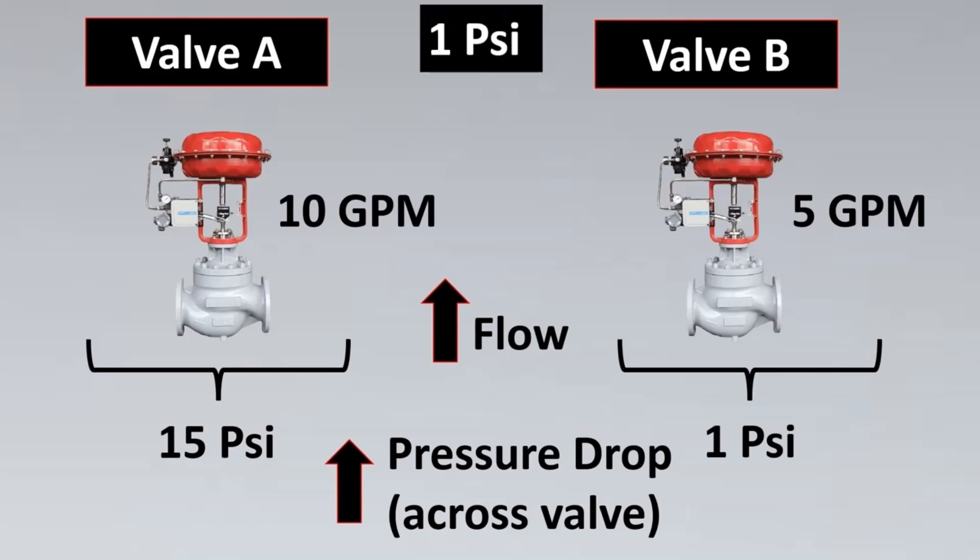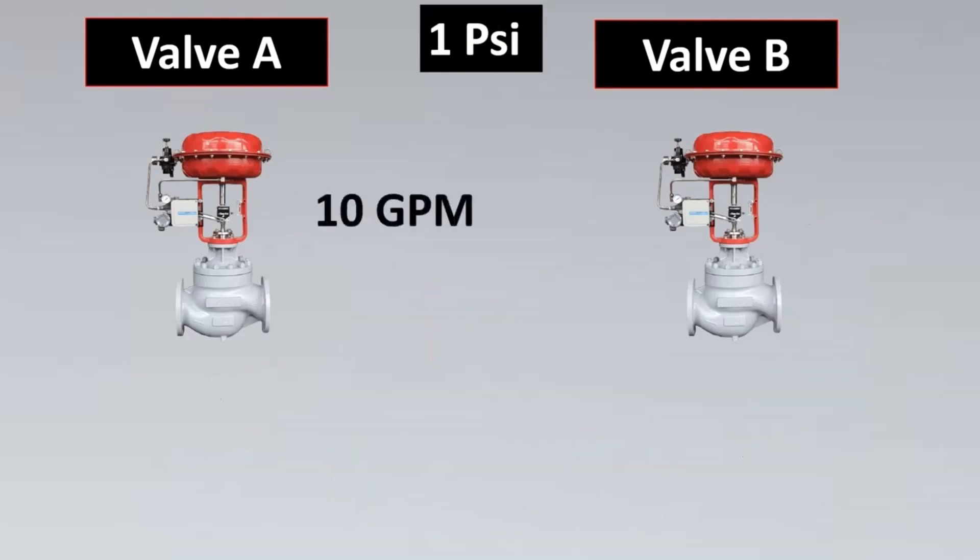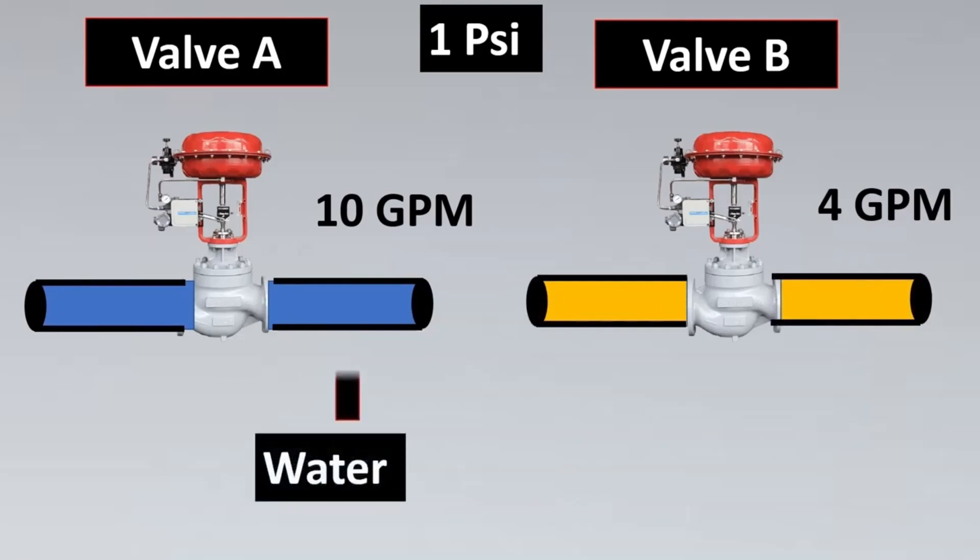Why? Because there could be the case that both the valves are made of the exact same construction, same size, but the pressure drop across the first valve is 15 PSI while the pressure drop across the second valve is just 1 PSI. So we know that as you increase the pressure drop across the valve the flow through the valve increases. So this flow increases just because of pressure drop and not because of the valve size.